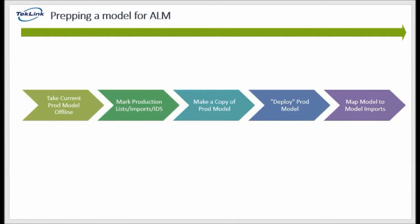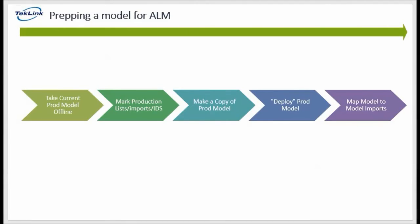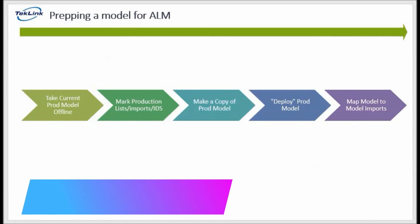Let's move on to the process of prepping a model for ALM. First, you're going to want to take the current model offline. You're going to want to mark all production lists, imports, and import data sources, and then create a copy of that model. Immediately following, promote that production model to deployed mode to secure compatibility between the two models. Finally, you're going to want to remap the model-to-model imports — this is typically done if you're going with a split model approach, have scheduled imports coming from outside of Anaplan, or have scheduled imports coming from a data hub. For a demonstration of this process in a real Anaplan model, be sure to check out our next video, and feel free to reach out to TechLink with any questions at anaplan@techlink.com.